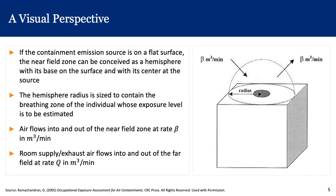Visually, we can imagine the contaminant emission source on a flat surface such as a table, with a worker working on this table. The near-field zone can be conceived as a hemisphere with its base on the surface of the table, centered at the source. The worker is leaning over the table with his or her nose inside this imaginary hemisphere. The hemisphere radius is sized to contain the breathing zone of the individual whose exposure level is to be estimated. Air flows into and out of this near-field at a rate of beta in cubic meters per minute. The room supply and exhaust air flows into and out of the far field at a rate of Q in cubic meters per minute.